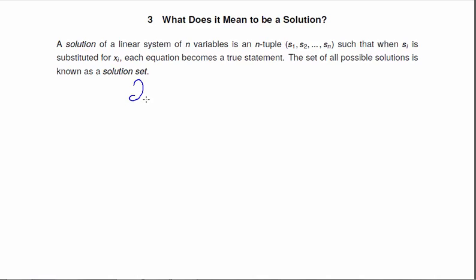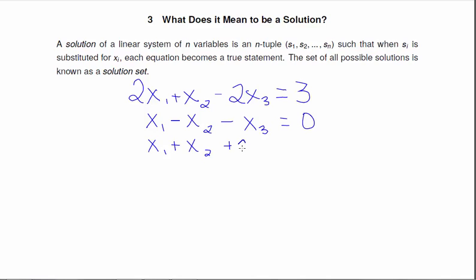So let's look at an example. 2X1 plus X2 minus 2X3 equals 3. The next equation, X1 minus X2 minus X3 is equal to 0. And my third equation, X1 plus X2 plus 3X3 is equal to 12.